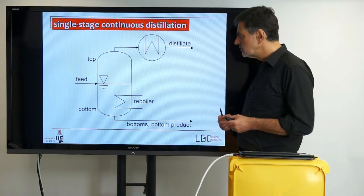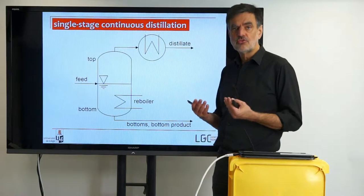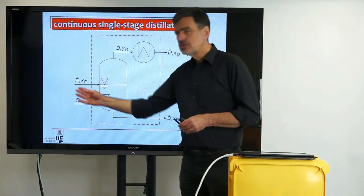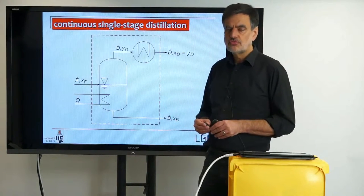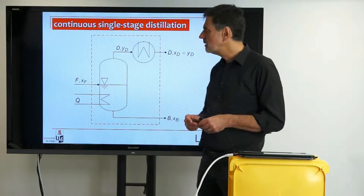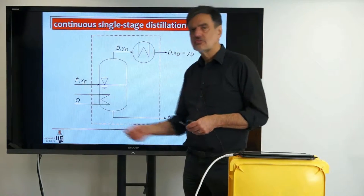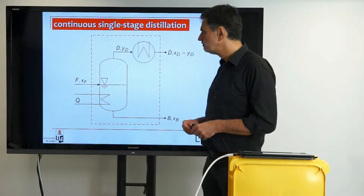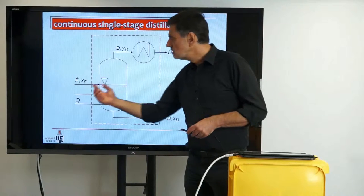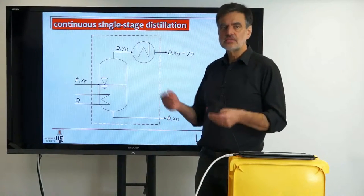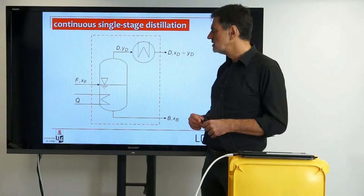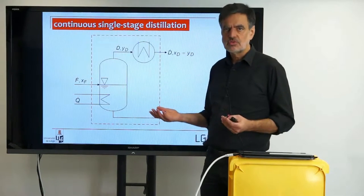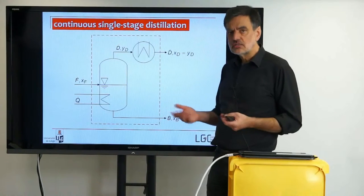Before we set up the balances, we first have to define our variables that describe everything relevant. The feed entering is called F-dot — dot always refers to something per time, so it's a flow rate, amount of substance per time — and it has a composition xF, or more precisely xFi for all components. We can describe this on an amount of substance basis or on a mass basis; I will stick with the amount of substance basis as it appears more natural with respect to equilibrium information, though you can convert everything to a mass basis and get identical results.